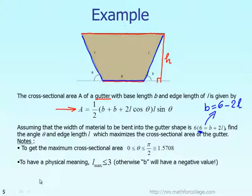Whenever you see variable B, you replace it with the formula 6 minus 2L. Then clearly, the area that you want to maximize will be a function of only two variables: L and theta.